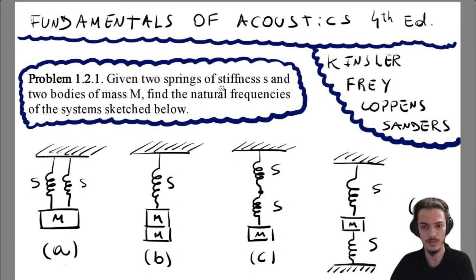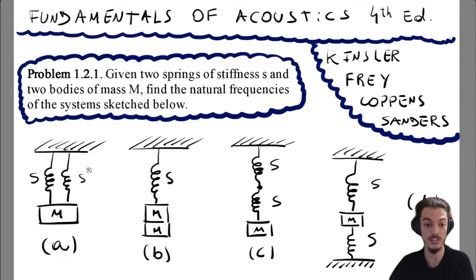Let's read the text of the problem: given two springs of stiffness s and two bodies of mass m, find the natural frequencies of the systems sketched below. So we have here different combinations of springs with two springs in parallel.